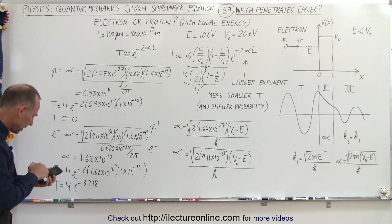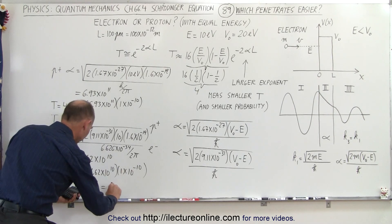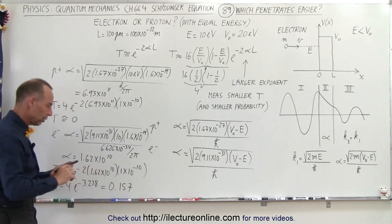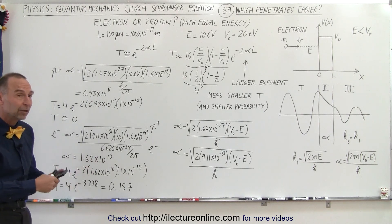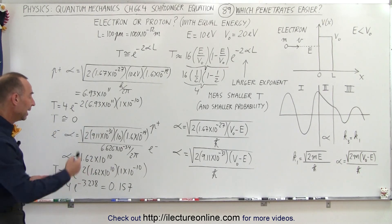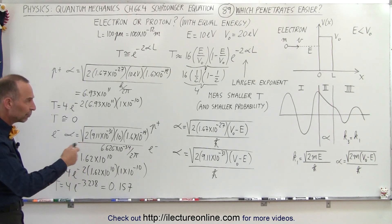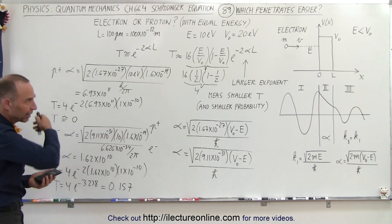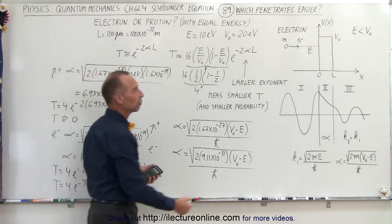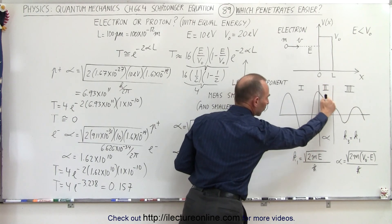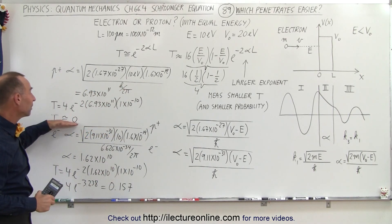The transmission coefficient for the electron is 4 times e to the minus 2 times 1.62×10^10 times 1×10^-10, giving an exponent of about 3.238. Taking the exponential and multiplying by 4 gives T equal to 0.157. This means 15.7% of the particles will make it through the barrier, and the rest will be reflected. Some particles will be reflected at the first wall, some will penetrate partway and return at the far wall, but a significant fraction of electrons will tunnel through.